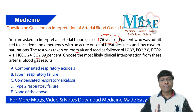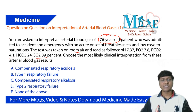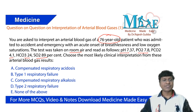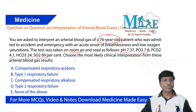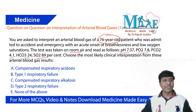Choose the most likely clinical interpretation from these ABG results. The options are: compensated respiratory acidosis, type 1 respiratory failure, compensated respiratory alkalosis, type 2 respiratory failure, or none of the above.